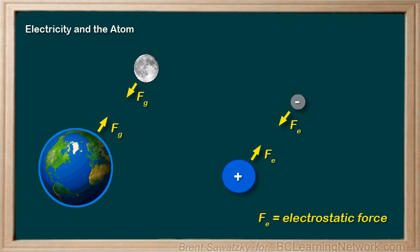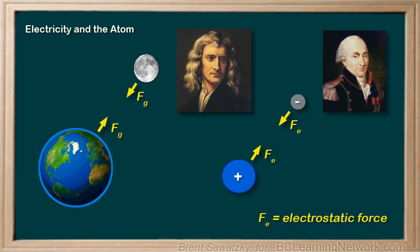Just like we can calculate and predict forces of gravity, thanks in part to Isaac Newton, we can also calculate and predict electrostatic forces, thanks in part to Charles Coulomb. Protons and electrons attract each other, just like gravity, and so it's fairly easy to visualize.